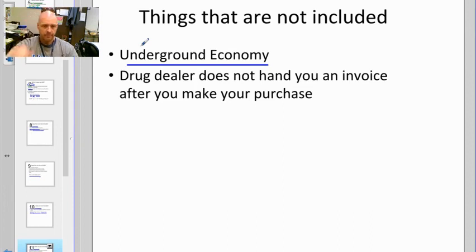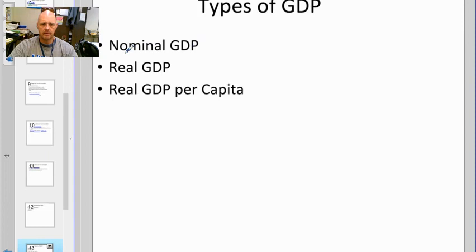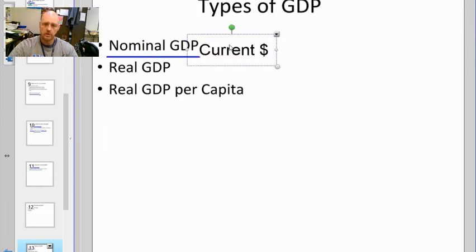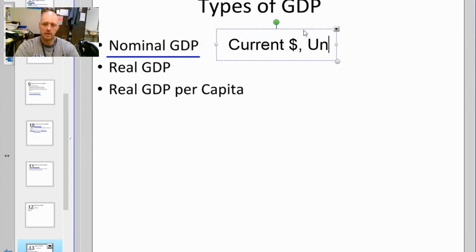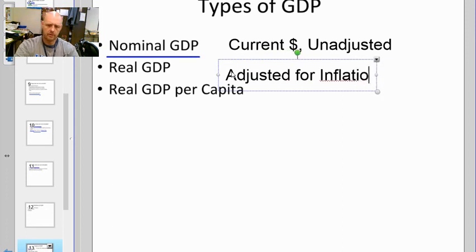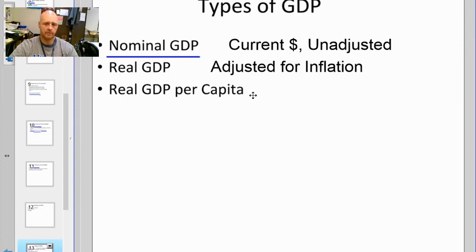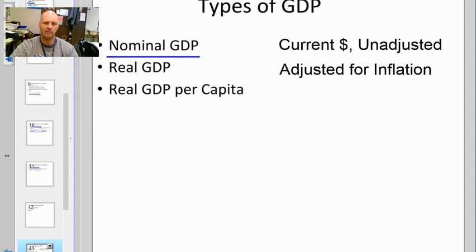Consumption is the largest portion of GDP. Government and business are roughly 10 to 20% each, and net exports is a very small amount. There's something called nominal GDP — that deals with current dollars unadjusted for inflation. Real GDP is logically adjusted for inflation. We don't want to see GDP going up simply because of inflation and think we made more stuff — it could just mean the price went up. We produced the same amount of stuff as last year; it just costs more, which is why it looks better.